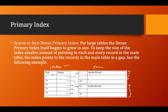With a sparse index, searching is slightly less direct. For example, if I want to search for the 23rd record, instead of going directly to record 23, I go to the pointer for 21, which takes me to record 21, and from there I search forward to record 23. This is how a sparse or non-dense primary index works.